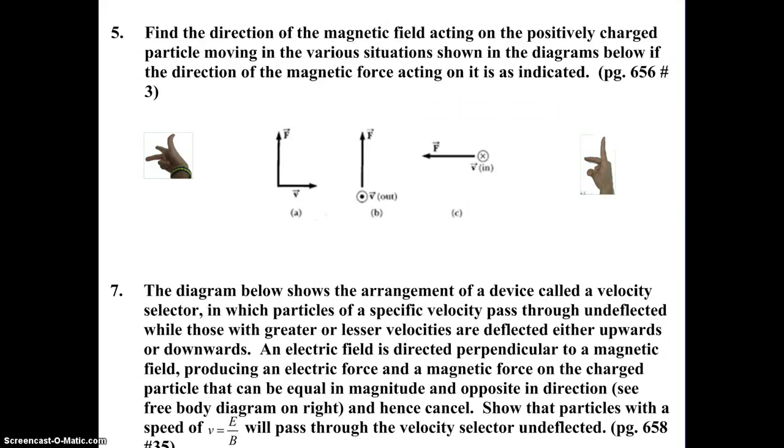Find the direction of the magnetic field. So they want the direction of B acting on the positively charged particle - key information because it's going to tell us which hand to use if we have to use a hand rule. The charged moving particle in the various situations shown in the diagram below if the direction of the magnetic force acting on it is as indicated. So you can see in each of the diagrams they're giving us the direction of F and the direction of V, and we're going to find the direction of B. We're going to talk about some test-taking strategies here as well as obviously applying the hand rules to get the correct answer.